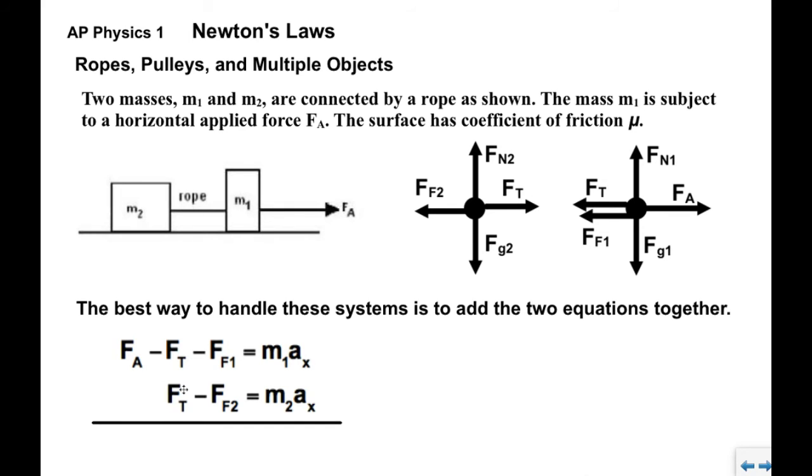Typically the tension force is one of them, and what we find is that when we add the two equations together, because the Ft's are the same at both ends, they will cancel each other out. So we have Fa minus Ff1 minus Ff2 for the left side, and M1ax plus M2ax on the right.